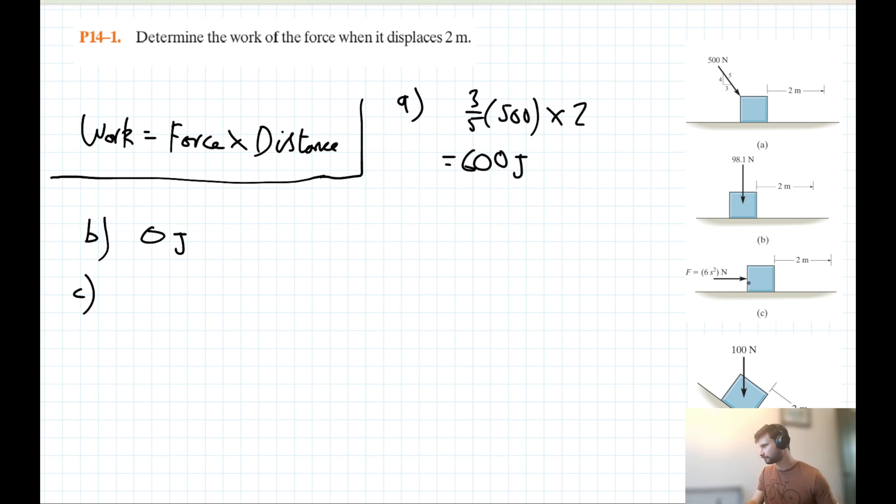Question C is a really interesting one, since force here is a function of displacement. S here is representing displacement. A helpful way to understand this problem might be to kind of visualize it. If I imagine I set up some axes here, where on my vertical I've got f, on my horizontal I've got s, and we understand that f here is equal to 6s squared, then when s is equal to 0, the force here is going to be 0, since 6 times 0 squared, that's 0.